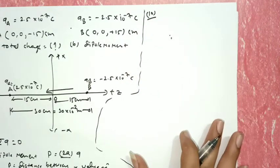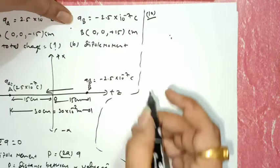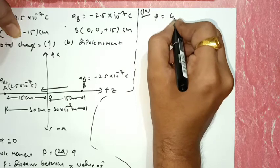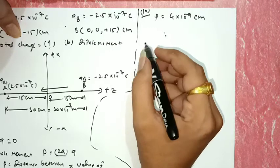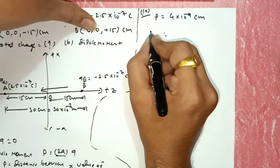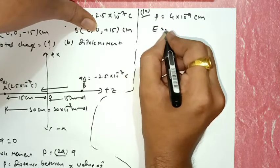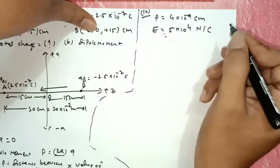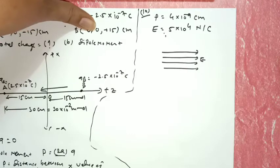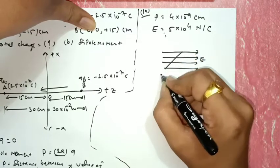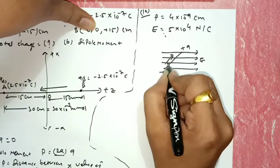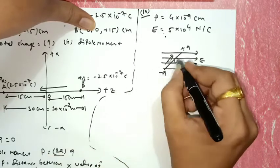Numerical 10: An electric dipole with dipole moment P = 4 × 10⁻⁹ coulomb·meter is aligned at 30 degrees with the direction of a uniform electric field of magnitude E = 5 × 10⁴ newton per coulomb. The dipole moment P makes angle theta = 30° with the electric field E.